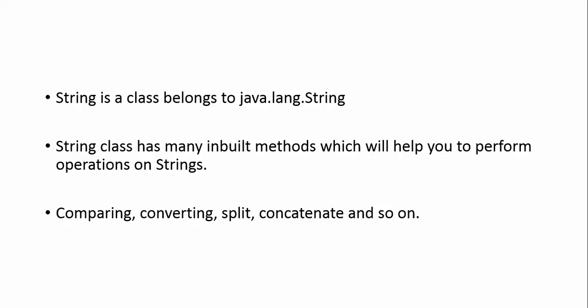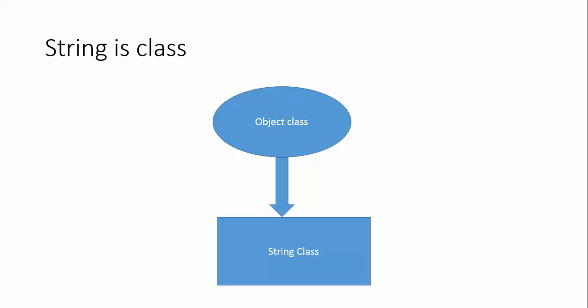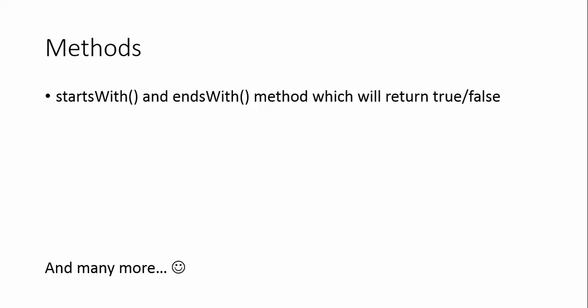String is a class in Java which belongs to the java.lang.String package. String has many built-in methods which help you perform operations on a string like comparing, converting, split, concatenate, and so on. In Java, the parent class of all classes is the Object class. String class directly inherits the Object class. Some available methods include startsWith and endsWith — these check if a certain string starts or ends with a given substring and return true or false.